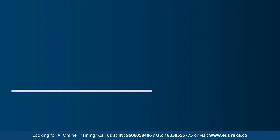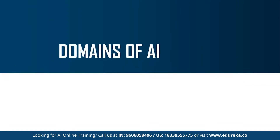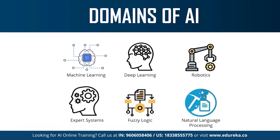Moving on to the last topic: the different domains or branches of artificial intelligence. AI can be used to solve real-world problems by implementing machine learning, deep learning, natural language processing, robotics, expert systems, and fuzzy logic. AI has also been used in computer vision and image processing. Machine learning is basically the science of getting machines to interpret, process, and analyze data in order to solve real-world problems.